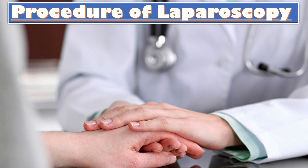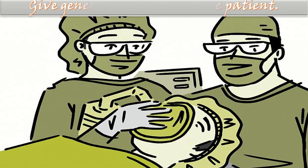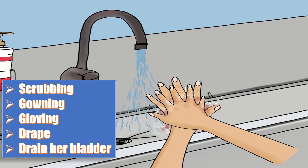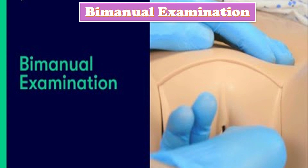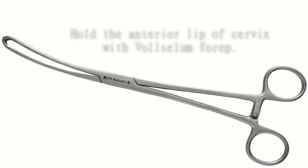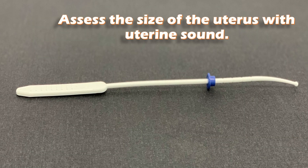For the laparoscopic procedure, I will introduce myself to the patient, explain the whole procedure including its needs and complications, and take informed consent. The anesthetist will give general anesthesia. The patient is positioned to allow full uterine anteversion. After scrubbing, gowning, gloving, and draping, drain the bladder, perform bimanual examination to assess position, size, and mobility of the uterus. Retract the posterior vaginal wall, hold the anterior lip of the cervix with vulsellum forceps, and assess uterine size with a uterine sound.